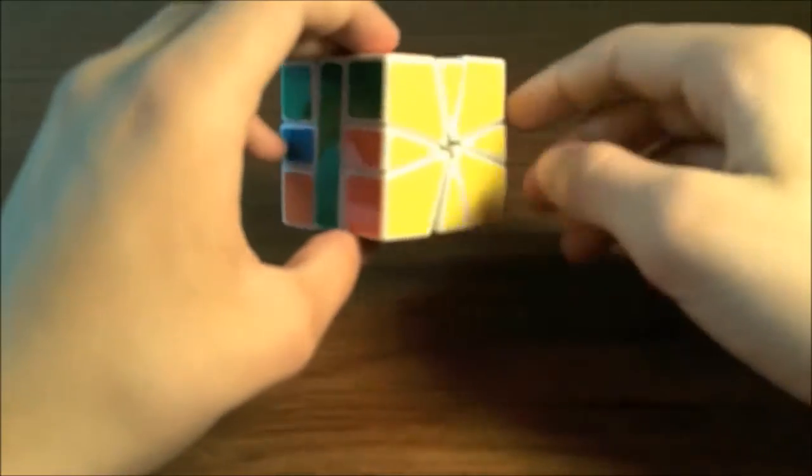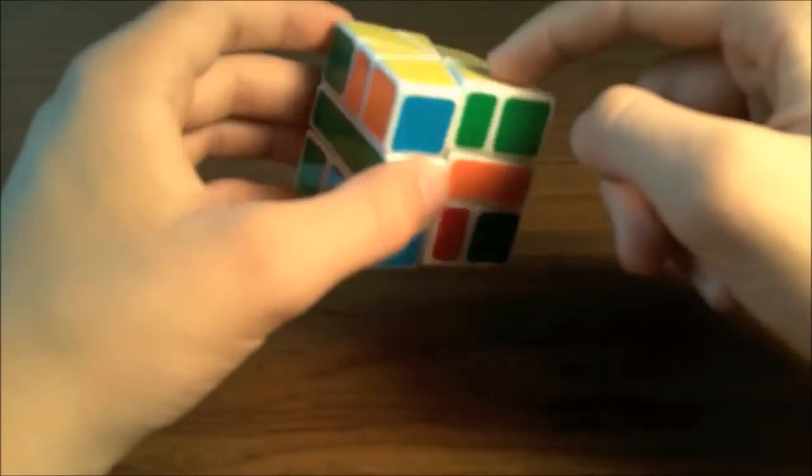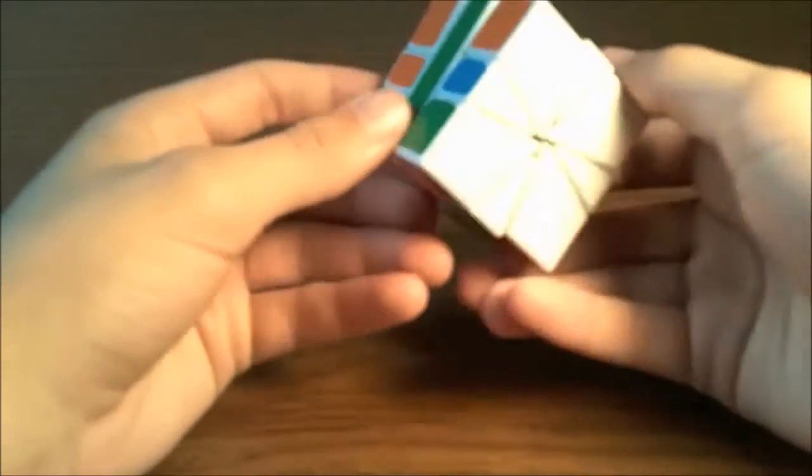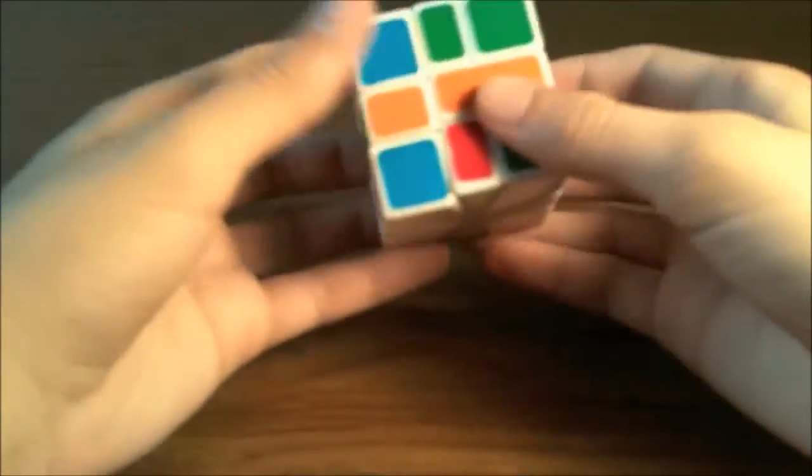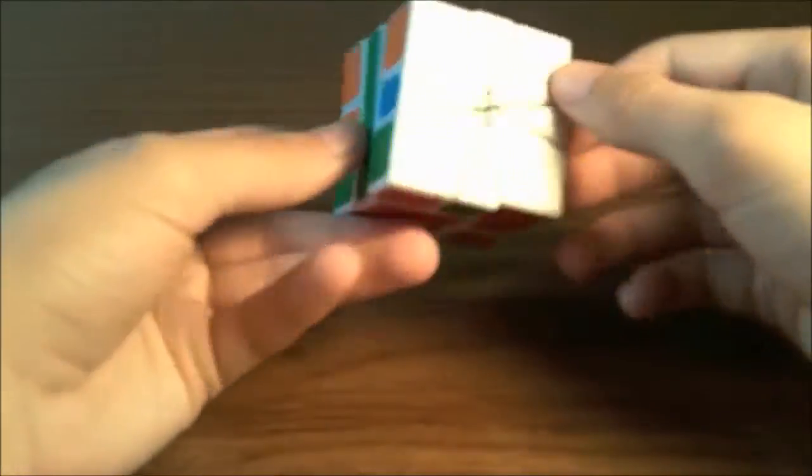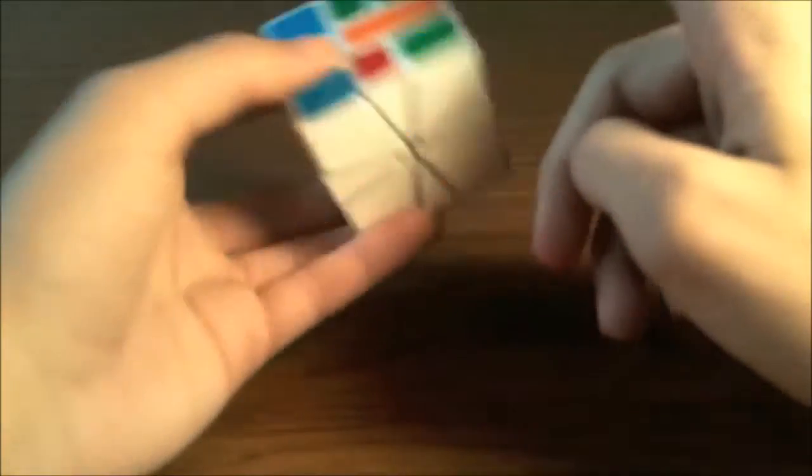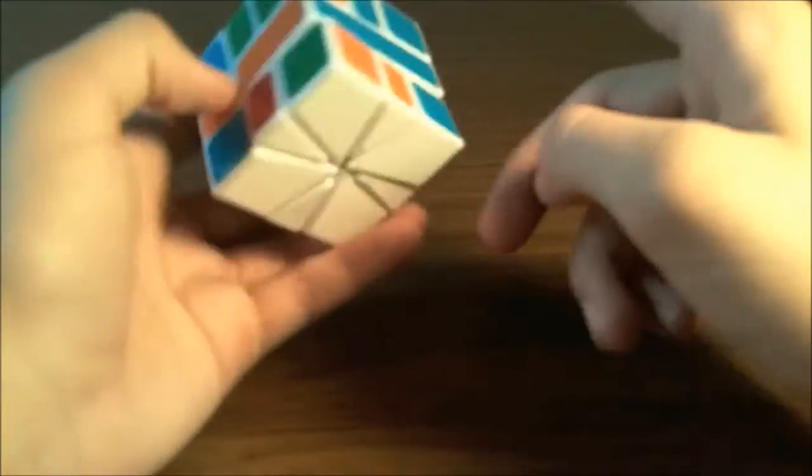The same thing here, we see that on the top we have a J perm, so we only have an adjacent swap. Then on the bottom we have a J perm. So this does show up on 3x3 even though they're not the same. You can recognize them both like that.